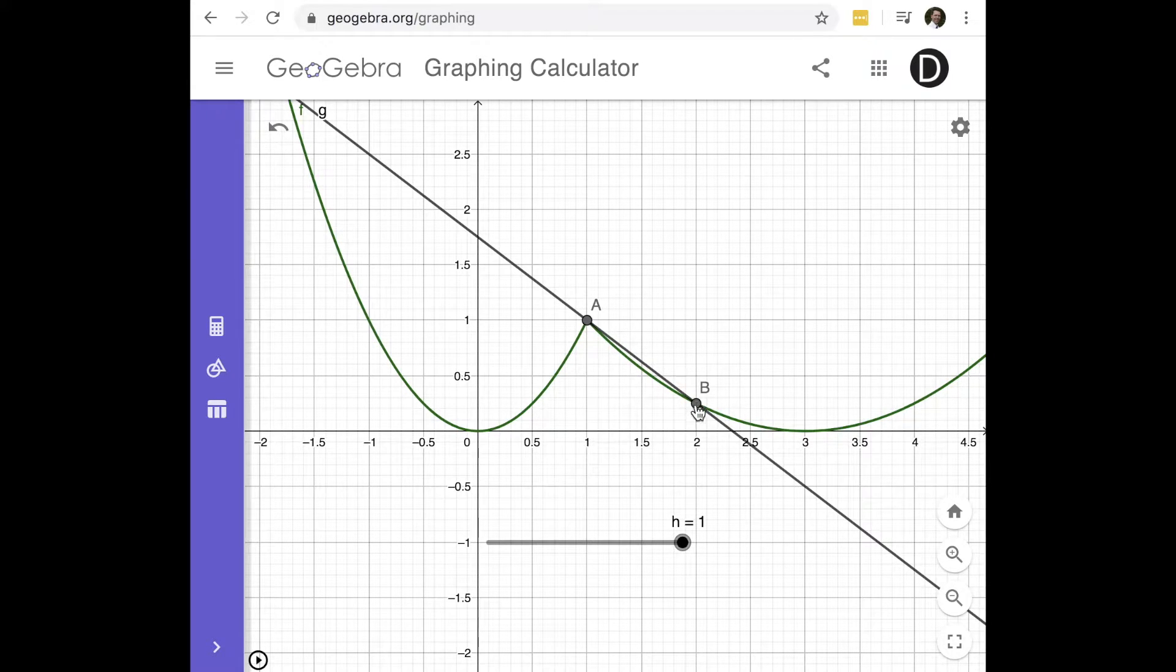And notice what happens, I'll turn on this animation. This h is going to go towards 0. And you'll see that this point B moves towards the point A. And my secant line, so this is a secant line right now, is going to look more and more like a one-sided tangent line. So let's move that in.